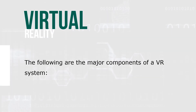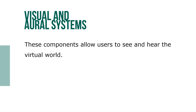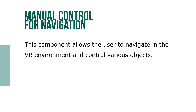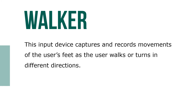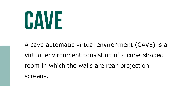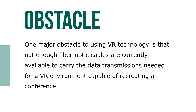The following are major components of a VR system. Visual and aural systems are components that allow users to see and hear the virtual world. Manual control for navigation allows the user to navigate in the VR environment and control various objects. Central coordinating processors generate and manipulate high-quality graphics in real-time, so it needs a very fast processor. A walker is an input device that captures and records movements of the user's feet as the user walks or turns in different locations. A Cave Automatic Virtual Environment (CAVE) is a virtual environment consisting of cube-shaped rooms in which walls are rear projection screens. One major obstacle for using VR technology is that not enough fiber-optic cables are currently available to carry the data transmissions needed for a VR environment capable of recreating a conference.